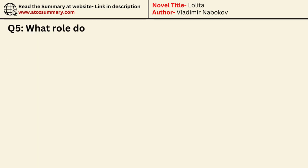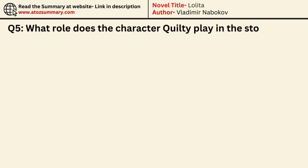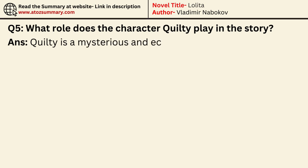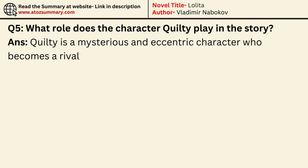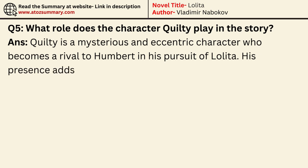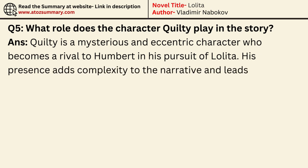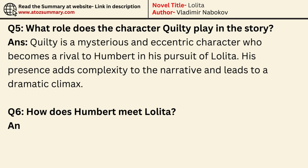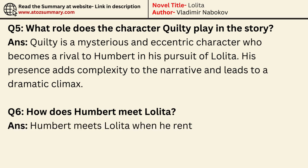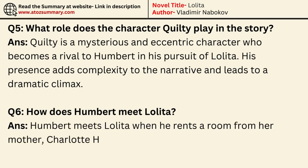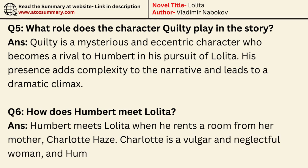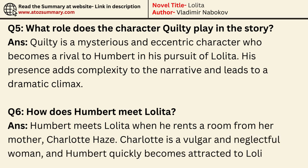What role does the character Quilty play in the story? Quilty is a mysterious and eccentric character who becomes a rival to Humbert in his pursuit of Lolita. His presence adds complexity to the narrative and leads to a dramatic climax. How does Humbert meet Lolita? Humbert meets Lolita when he rents a room from her mother, Charlotte Hayes, a vulgar and neglectful woman, and quickly becomes attracted to Lolita.